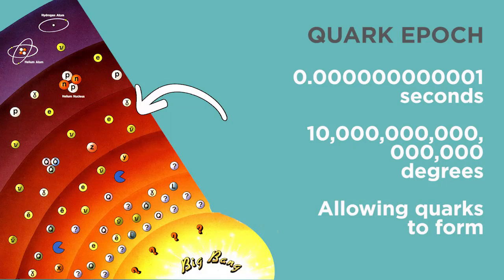This lasts until 10 to the negative 12 seconds, when the universe cools to a comfy 10 quadrillion degrees, starting the quark epoch — cozy enough to allow quarks and electrons and neutrinos to form in large numbers, and it allows the rest of the fundamental forces of the universe to untangle themselves.